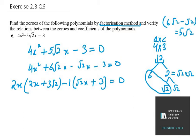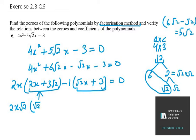Now you can see that these two bracket terms are not the same, so we need to make them the same. What we can take common from the first bracket is under root 2, because we have 2x under root 2 and 2x can be written as under root 2 into under root 2. So we are left with under root 2x plus 3 minus 1 times under root 2x plus 3 equals 0.